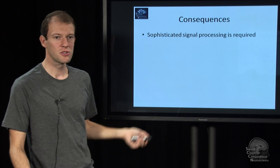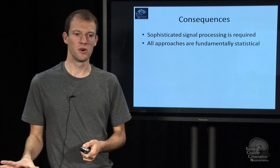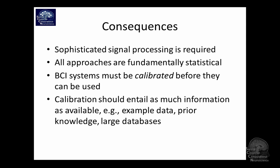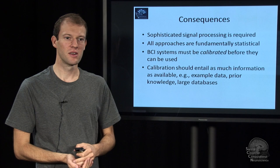So as a result, you will need sophisticated signal processing. Whatever you do needs to be statistical because you have uncertainty. And also because there's so much stuff that you don't know in advance, you need to calibrate a BCI. You need to start with some data and adapt some parameters, some data from that person ideally. And lastly, whatever you use for calibration, it should incorporate as much information about the person, about the task and things like that, that you can get.